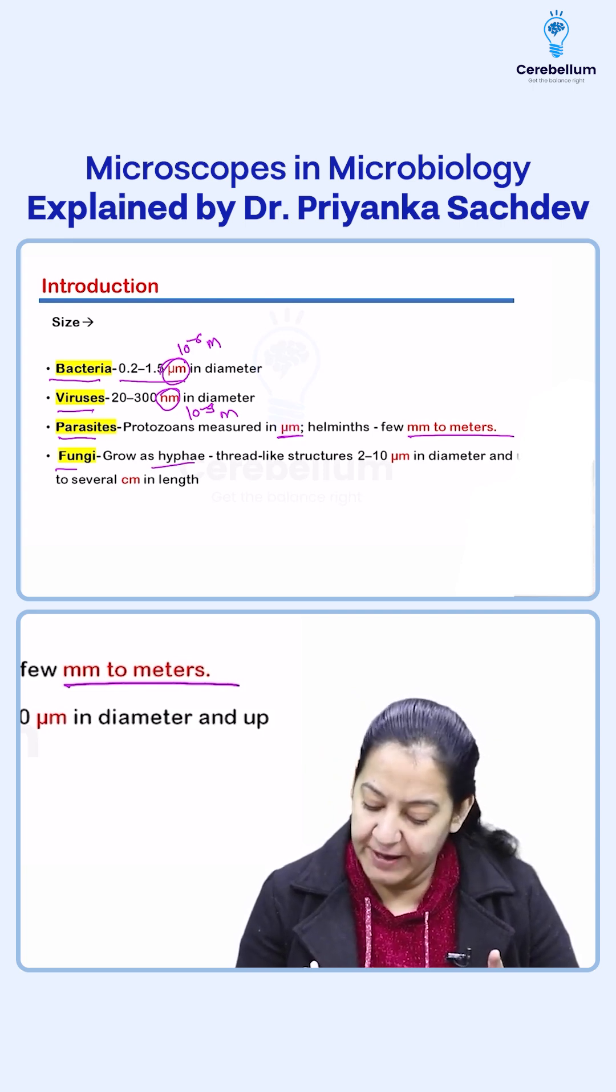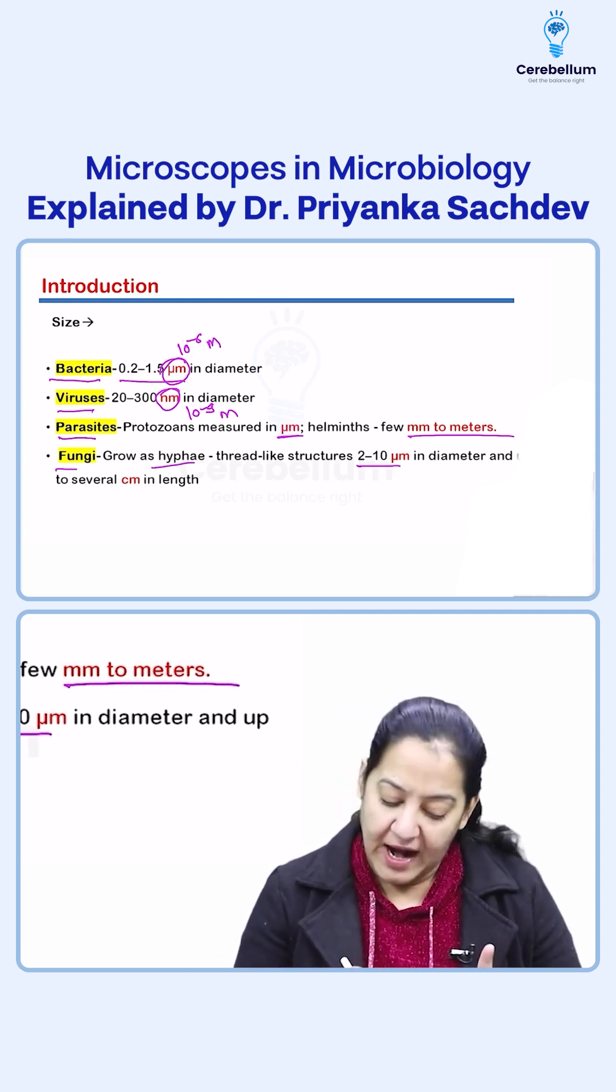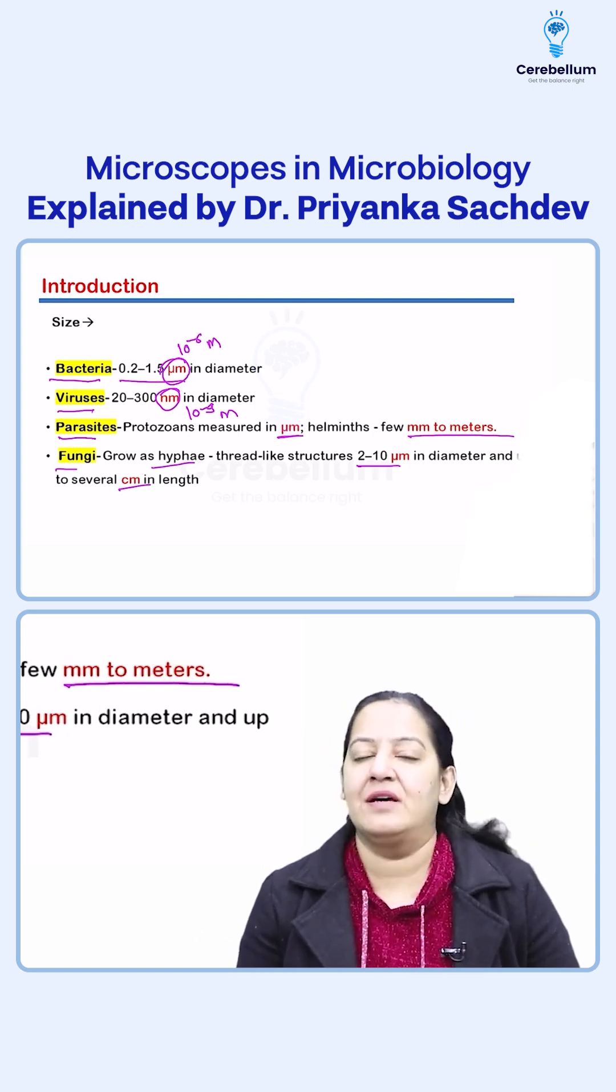The fungus can grow as a hyphae, the thread-like structure, 2 to 10 micrometers in diameter and up to several centimeters in length.